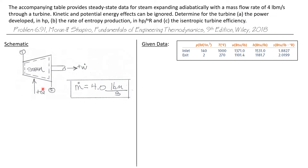Let's look at this problem. We've got a schematic of a turbine here. We have steam flowing through it, coming in at state one and exiting at state two. We have a mass flow rate of 4.0 pounds mass per second. Rather than having to look up values in tables, a lot of information was given to us — pressure, temperature, internal energy, enthalpy, and specific entropy at the inlet state one and exit state two.